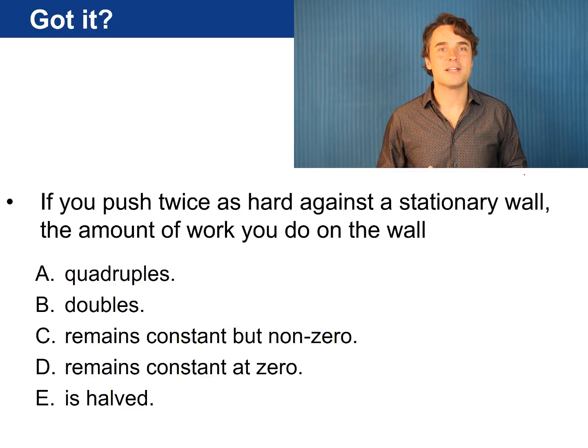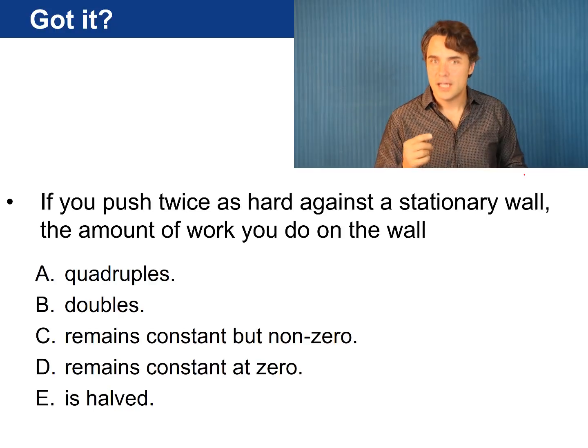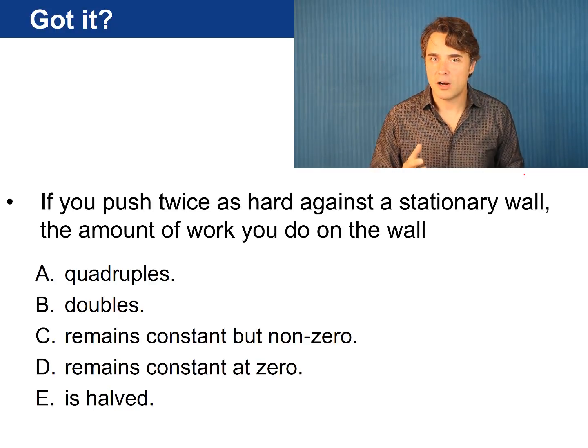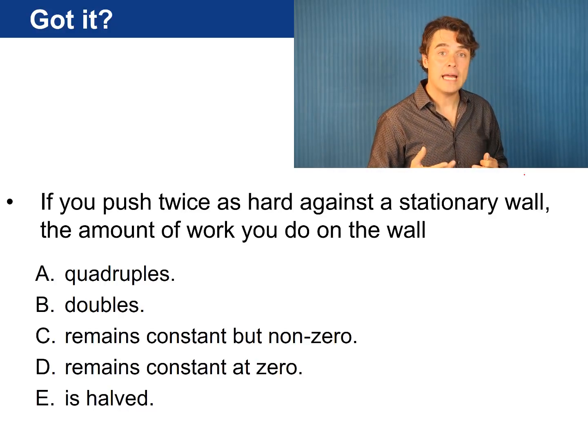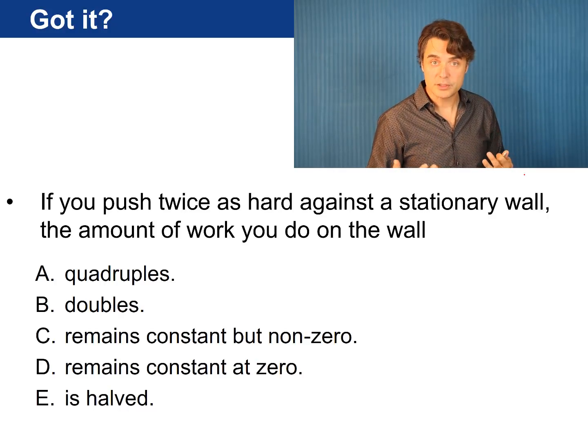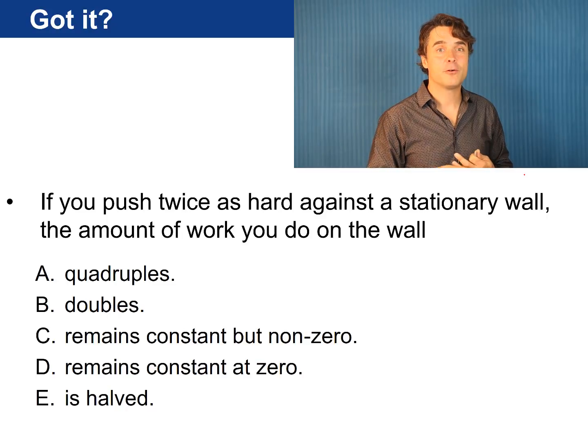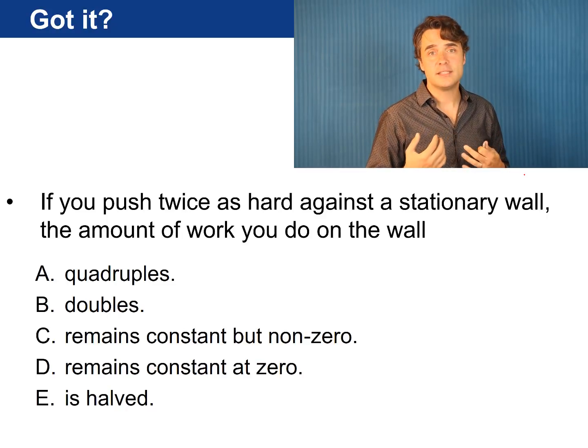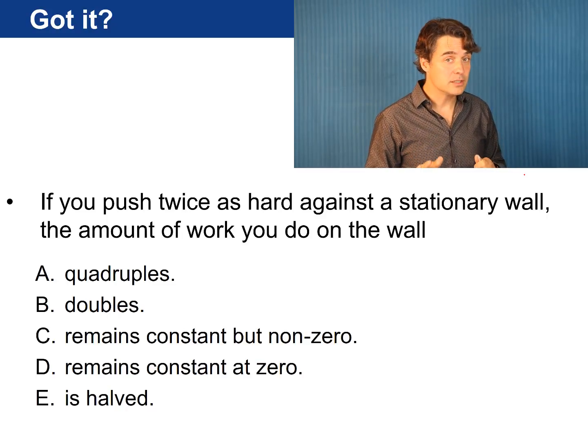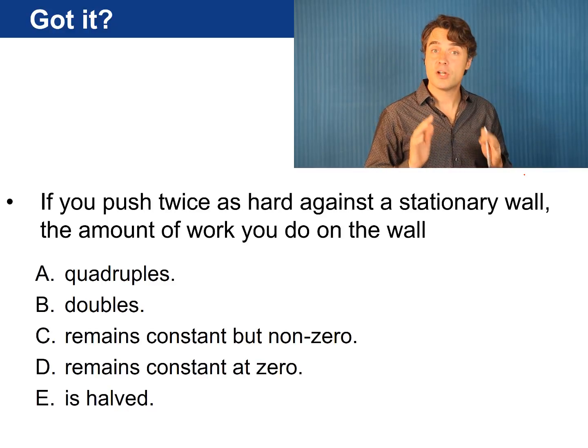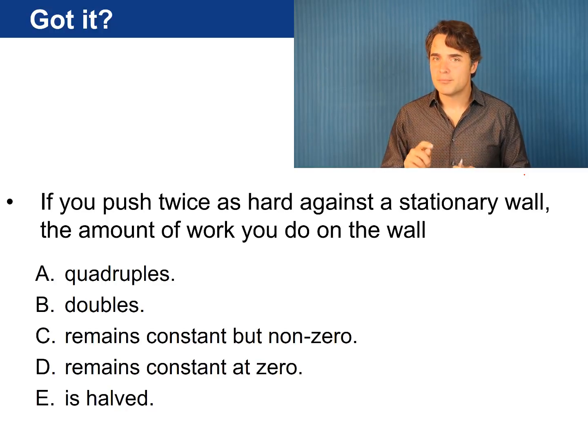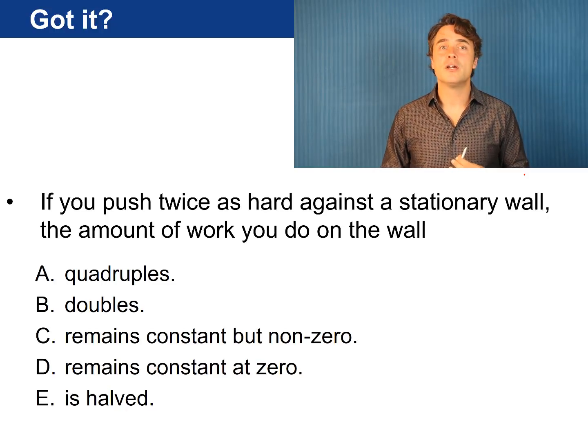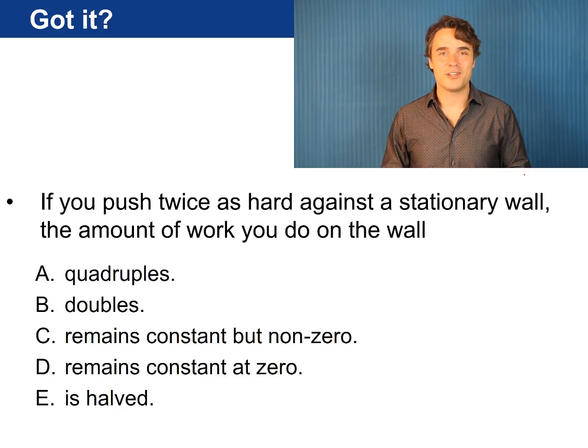Let's do a quick test to see if you've got it. If you push twice as hard against a stationary wall the amount of work you do on the wall: A quadruples, B doubles, C remains constant but non-zero, D remains constant at zero, or E is halved. Think about that, press pause on the video and when you're ready resume the video and I'll tell you the answer.